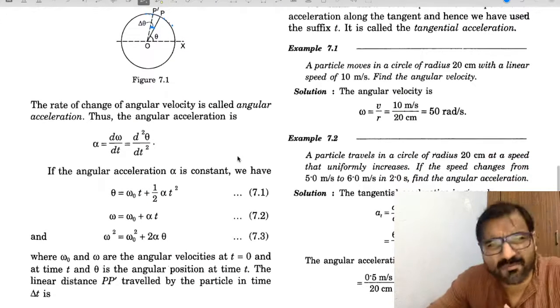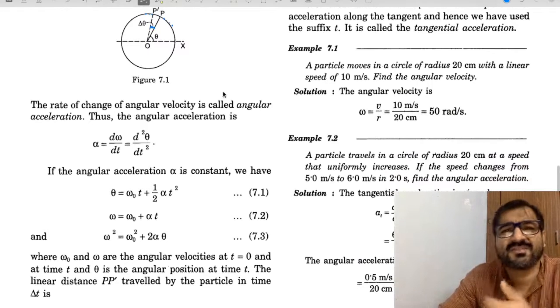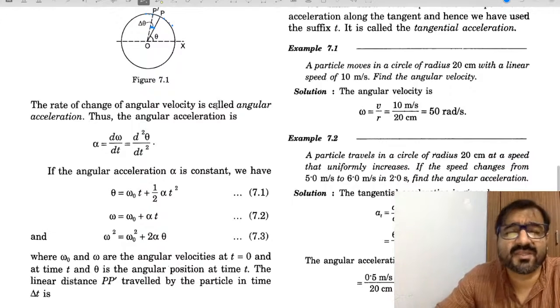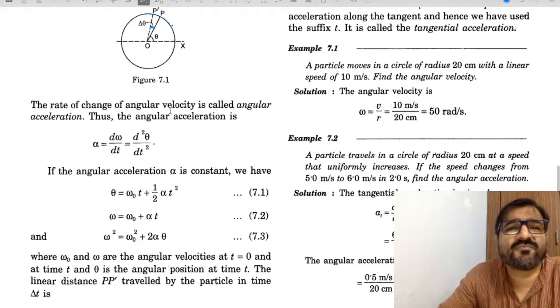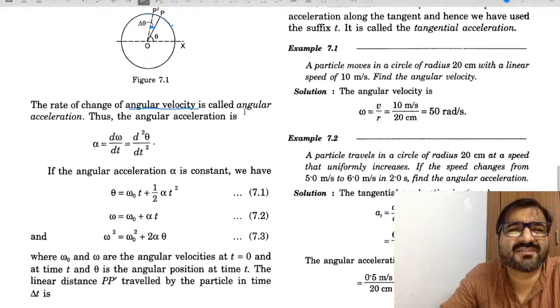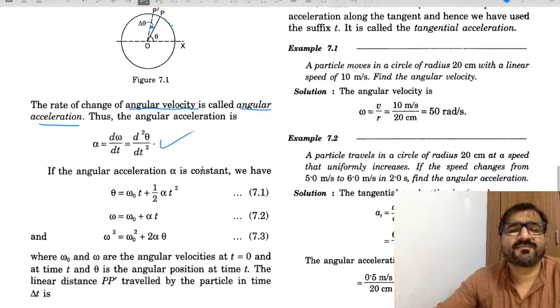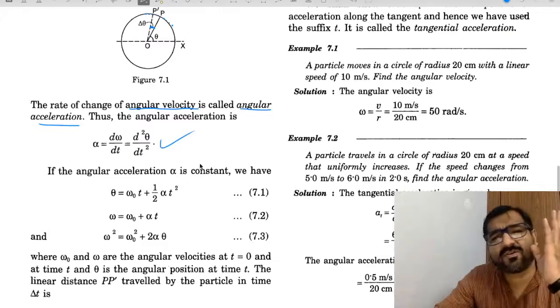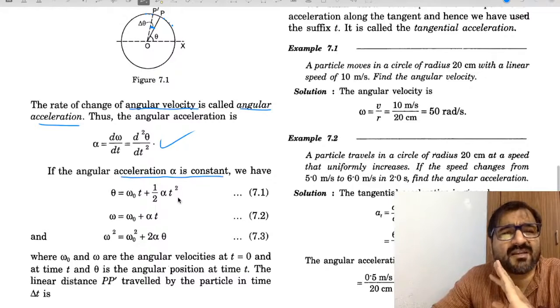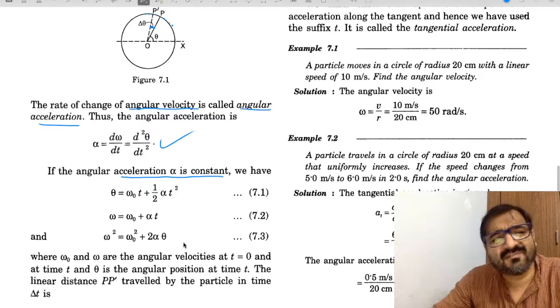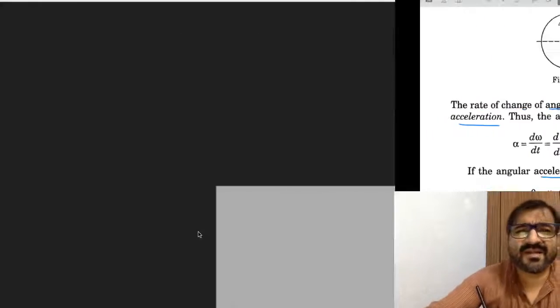Angular acceleration - this is a very simple idea. Angular acceleration is the rate of change of angular velocity. Very simple. Then, just as we derived equations for constant a, similarly here equations for constant alpha can be derived. The idea is just this much.